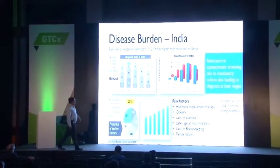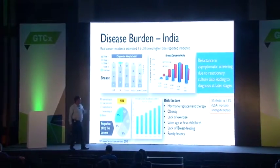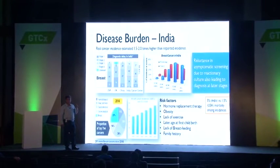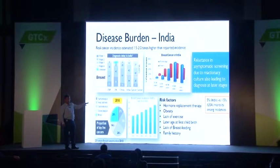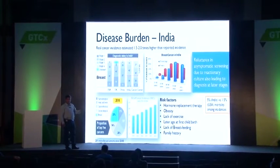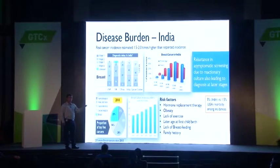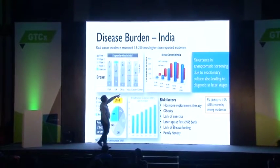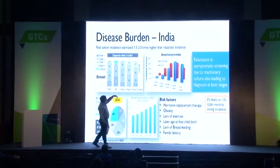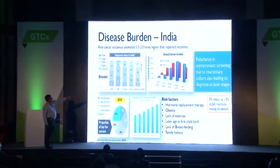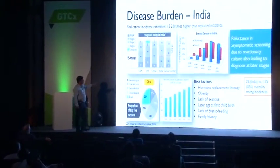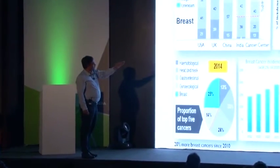In India, 5% of those suffering from breast cancer are dying, compared to only 1.5% in the US, because Americans detect it and consult doctors much earlier. Also notably, compared to 20 years ago, younger women — in the 20–30 and 30–45 age groups — are increasingly being affected in India, which is a serious trend.